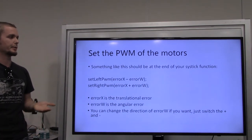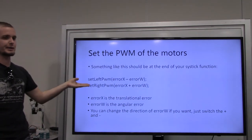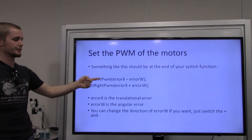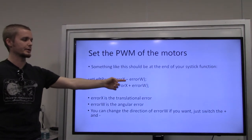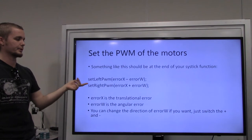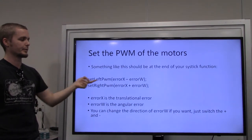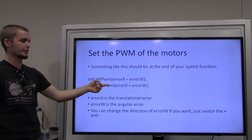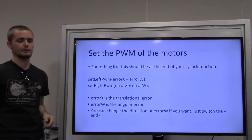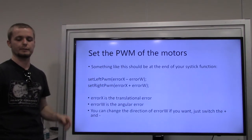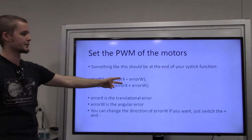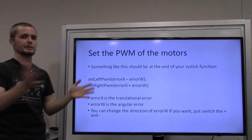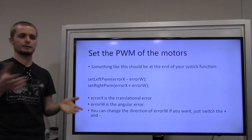Then we set the PWM of the motors. The code for this is fairly straightforward: you have some error_x (translational) and error_w (rotational). Your left PWM is error_x minus error_w, and your right PWM is error_x plus error_w. You can switch the signs as needed, but the error_w will just be opposite sign for each wheel.